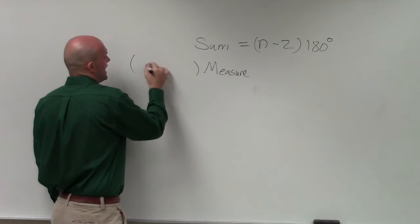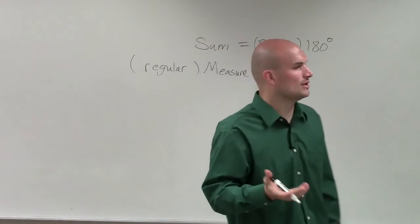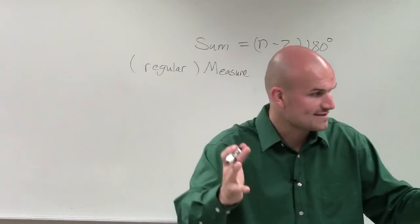Notice it has to be regular. We can't find the measure of one angle if we don't have a regular polygon. So it has to be regular, right? That means all the angles have to be equal.